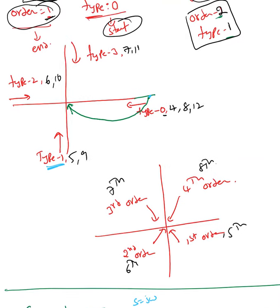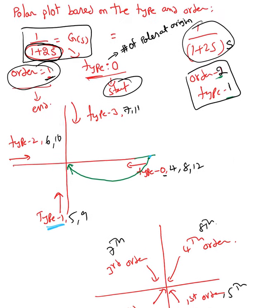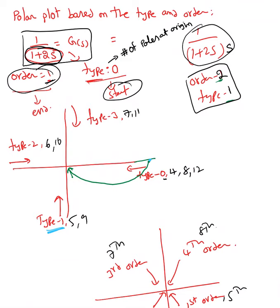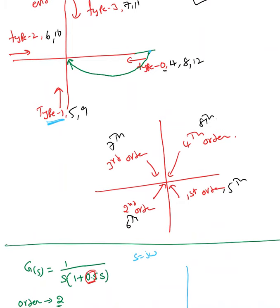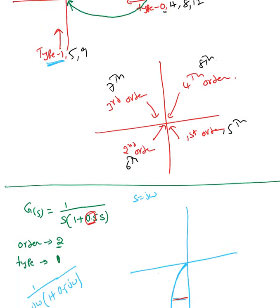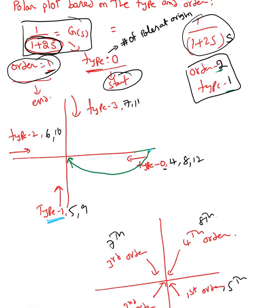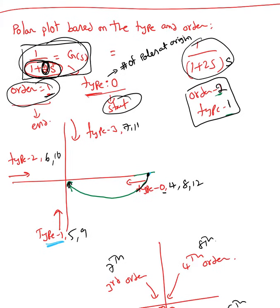So the order gives you the end point and the type gives you the starting point. The polar plot tells you the behavior of the system as omega changes. It's similar to the Bode plot but different — the Bode plot draws individual lines, while here we find the overall system behavior. For the example 1/(1+2s), order is one and type is zero, so it starts at the type-zero position and ends at the first-order position.